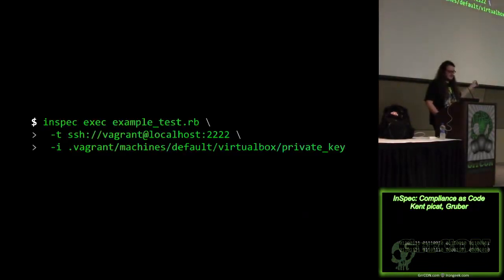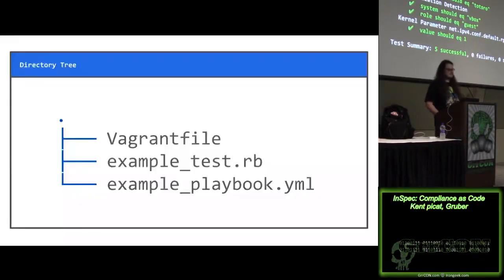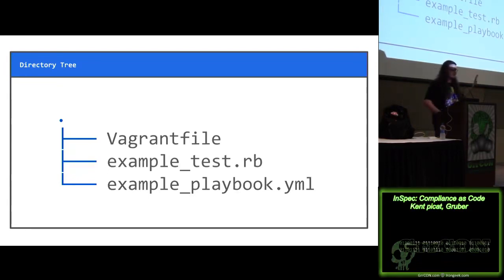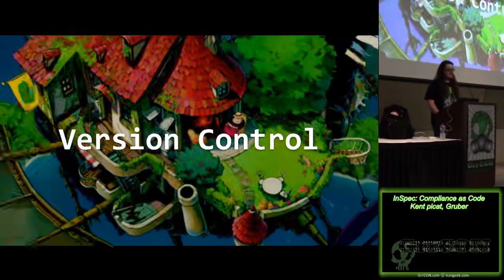I run the test — there's some extra stuff for SSHing via Vagrant and providing the private key, but you have those command line flags. The output shows the operating system is Ubuntu, we have the hostname, all those things passed. That logically follows the infrastructure-as-code mindset nicely. It's a totally separate thing that can inspect the state of the system without really affecting it, which allows you to build up your faith in InSpec as you go.